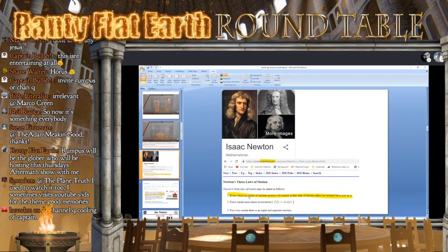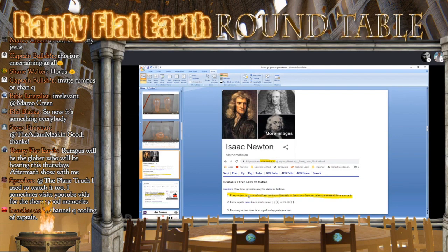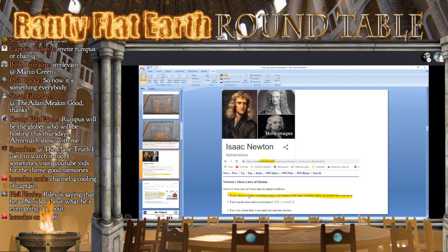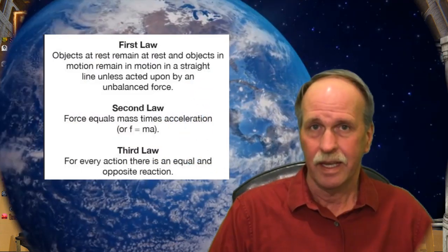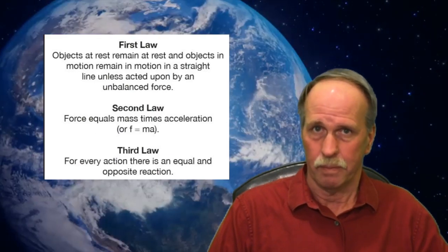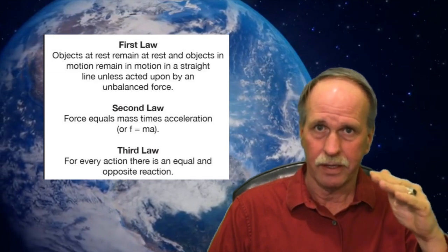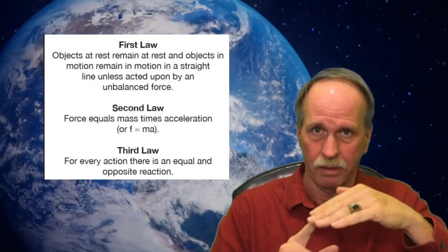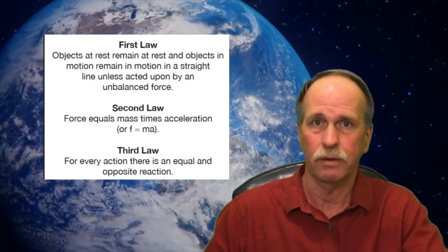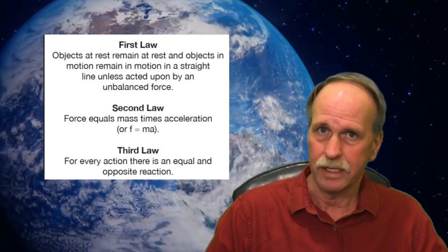But not everybody remembers the second part to it, which is that an object in a state of motion will remain in that state of motion unless acted upon by an external force. Yeah, Anthony, we actually do know about that. That's how satellites stay in orbit. You're moving in a straight line, and gravity pulls you down so that you fall around the earth. That's the way satellites orbit.